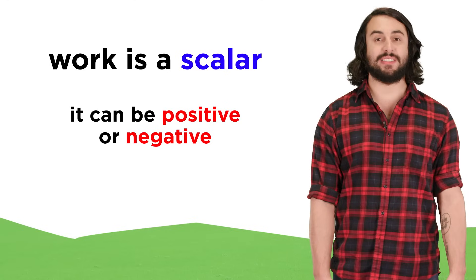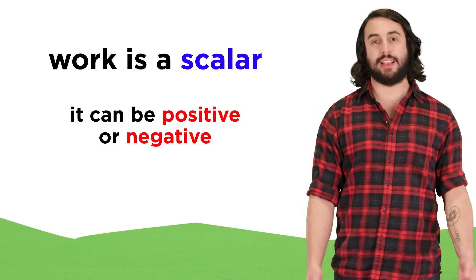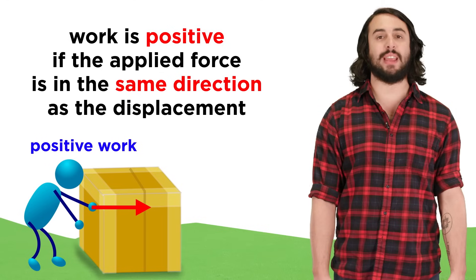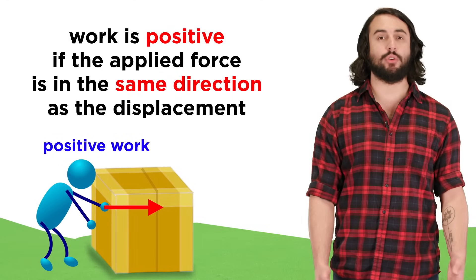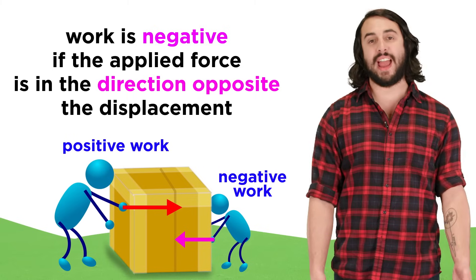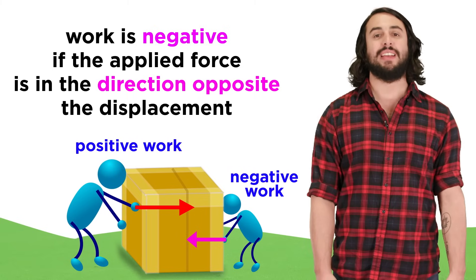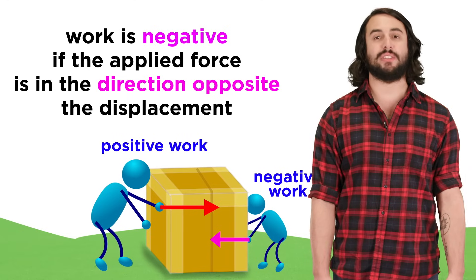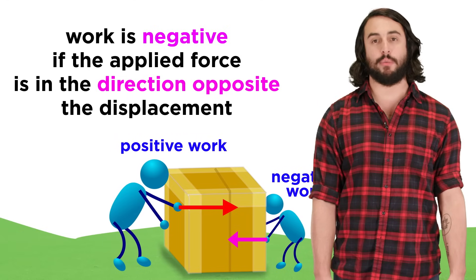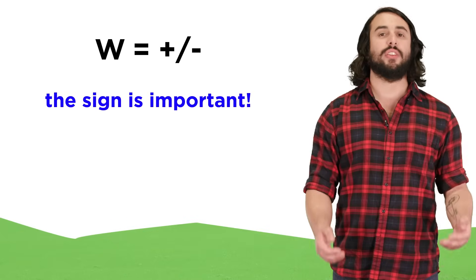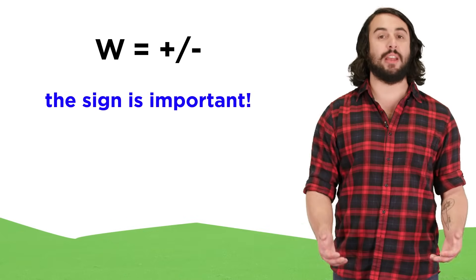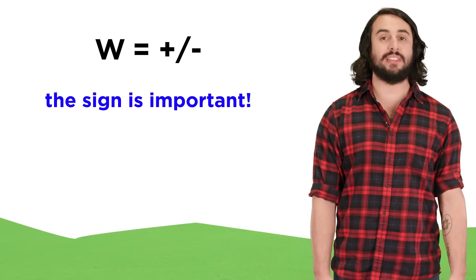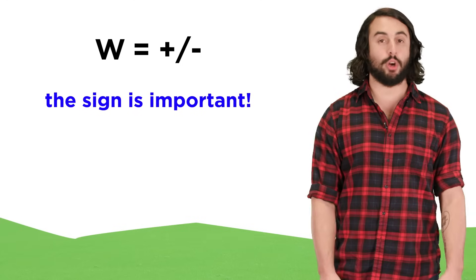We must bear in mind that work is a scalar and it can be positive or negative. Work will have a positive value when the applied force is in the same direction as the object's motion, like when pushing the box, and work will have a negative value if the applied force is in the direction opposite the object's motion, like if your baby brother pushes the box the other way but without enough force to stop it from moving forward. The sign on work is very important because it tells us if the speed of an object will increase or decrease as a result of applying the work.